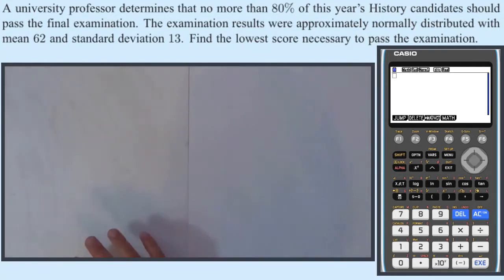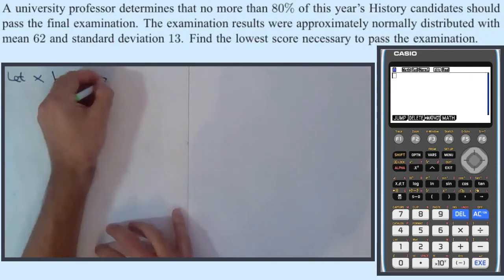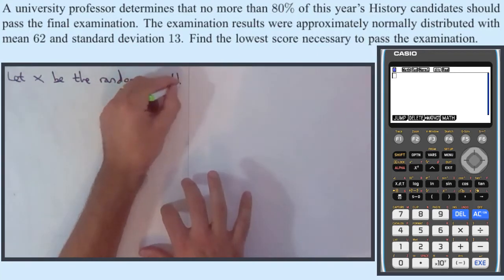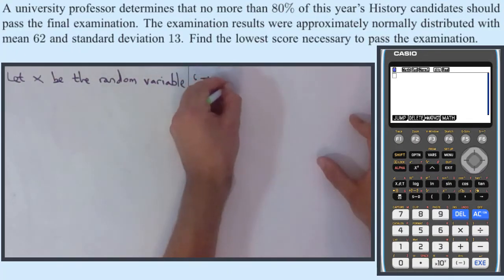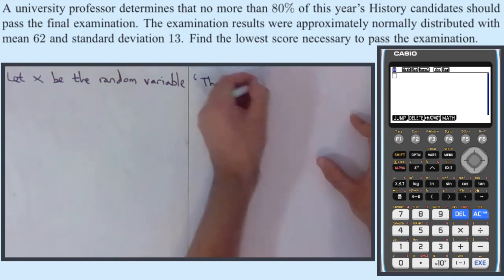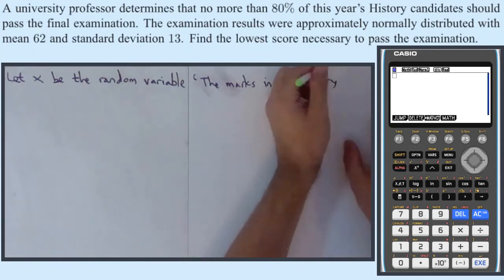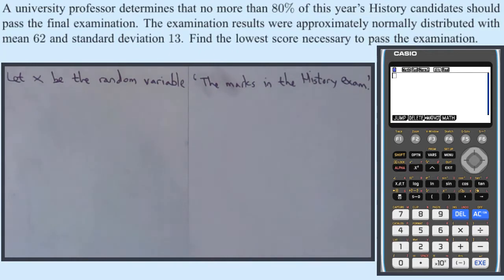What we need to do is define the random variable. So let X be the random variable. For a worded question like this I think it's nice to then convert it to notation. The question doesn't specify if it's a percentage or a score but it really doesn't matter. So if we define the variable the marks in the history exam then we can say how this thing is distributed.